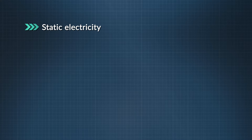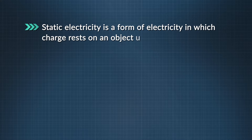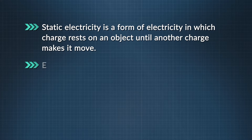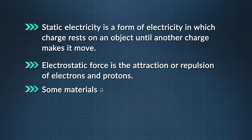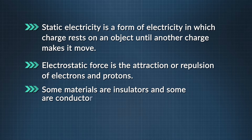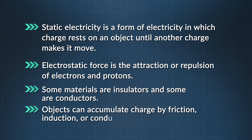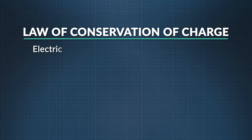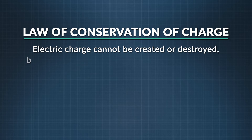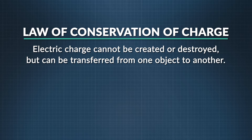Let's recap what we've learned about static electricity. It's one of two forms of electricity, in which charge rests on an object until something makes it move. The electrostatic force is the attraction or repulsion of electrons and protons. Some materials are insulators and some are conductors, and objects can accumulate charge by friction, induction, or conduction. The law of conservation of charge says that an electric charge cannot be created or destroyed, but can be transferred from one object to another.